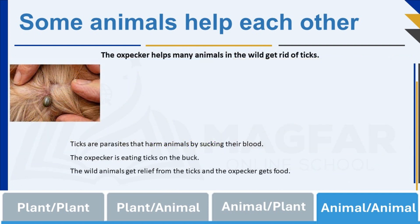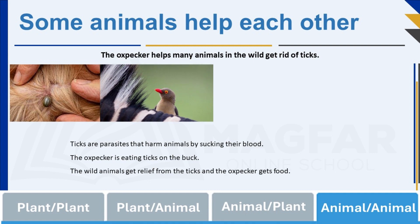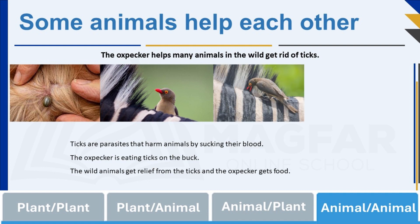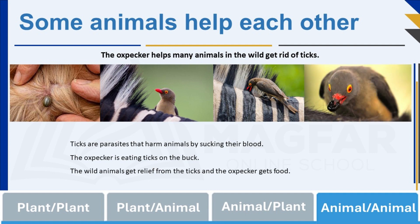In the wild, there's a helpful bird called the oxpecker that plays a superhero role for many animals, like the zebra. Ticks are tiny creatures that harm animals by sucking their blood. The oxpecker is like a natural pest control assistant — it lands on the back of the zebra and eats the ticks right off its skin. When the oxpecker eats the ticks, it helps the animal get relief from those blood-sucking pests and also gets a tasty meal for itself. It's a win-win situation: the zebra gets rid of the ticks and the oxpecker gets a meal.